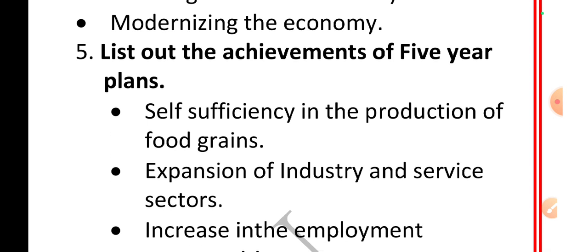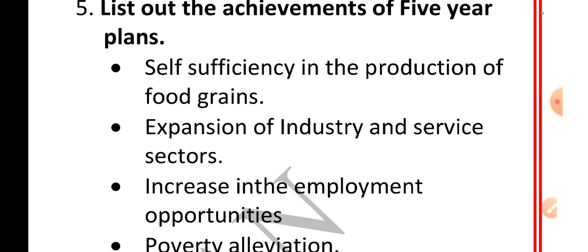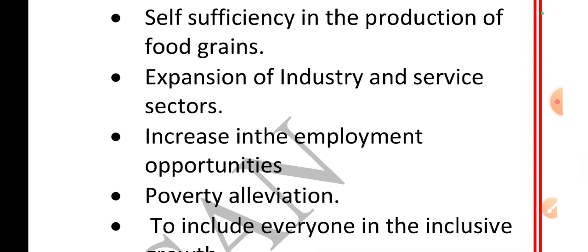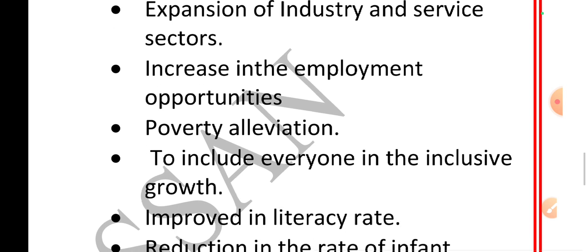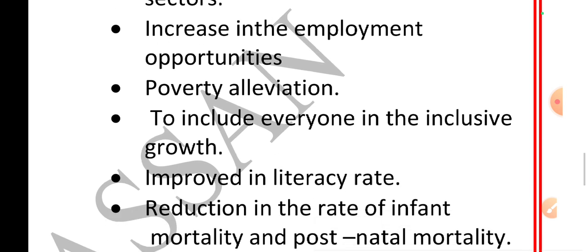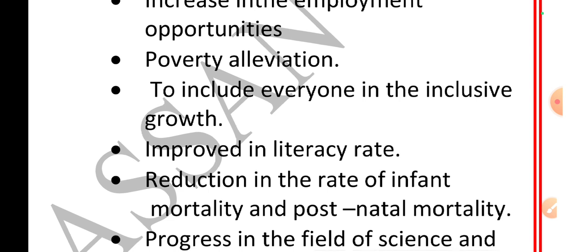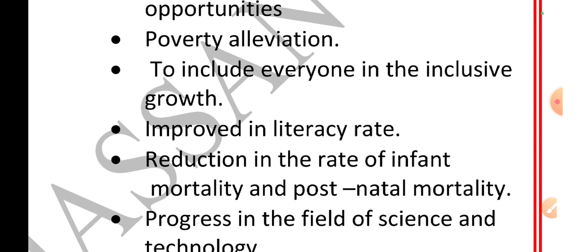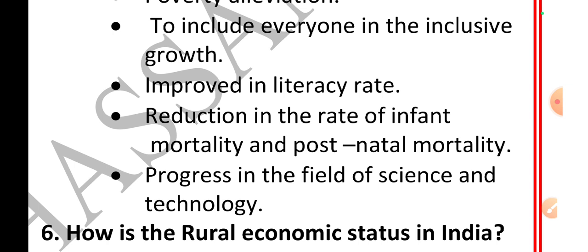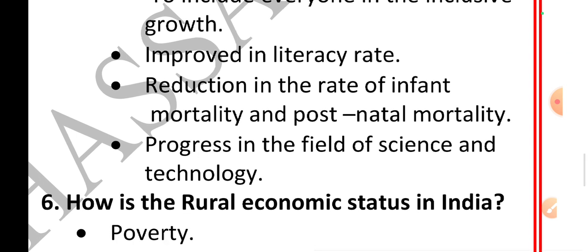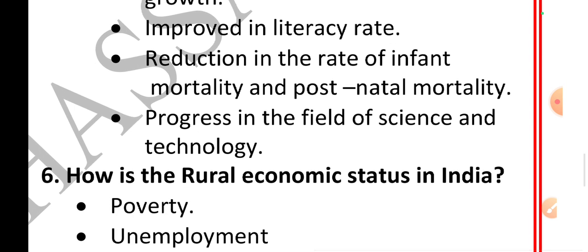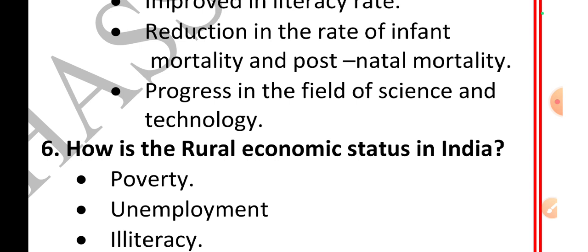List out the achievements of the Five Year Plans. Self-sufficiency in the production of food grains. Expansion of industry and service sectors. Increase in employment opportunities. Poverty alleviation. To include everyone in inclusive growth. Improvement in literacy rate. Reduction in the rate of infant mortality and post-natal mortality. Progress in the field of science and technology.